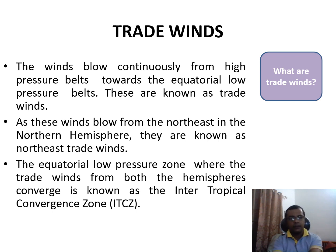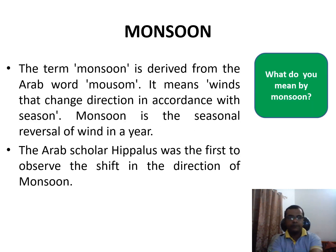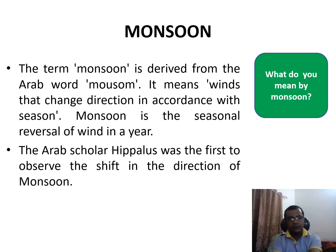What do you mean by monsoon? It's an important question from the SSLC point of view. The term monsoon is derived from the Arab word 'Mausam', which means winds that change direction in accordance with the season. It is the seasonal reversal of wind direction in a year.